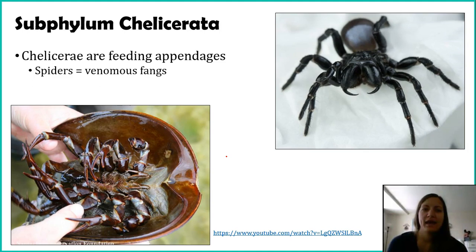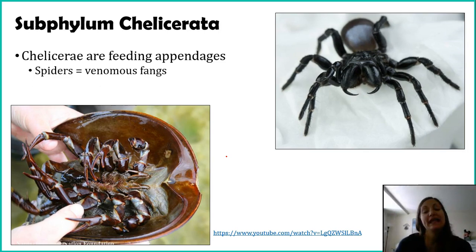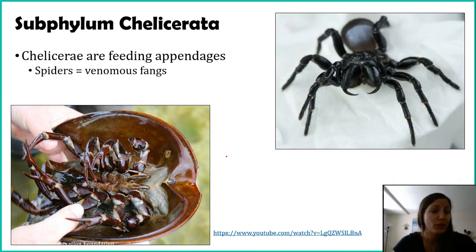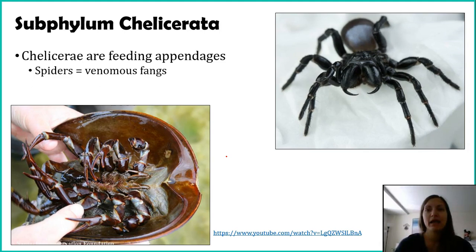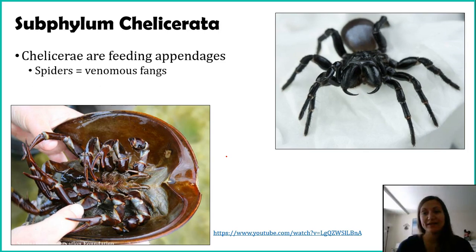The name subphylum Chelicerata comes from what are referred to as the feeding appendages — the chelicerae. On all organisms in this subphylum, whether ticks, spiders, or horseshoe crabs, two of their appendages have changed over time so they're no longer used for movement but for feeding. In spiders, these got modified even further — they're the venomous fangs, used to bite into something and release a venom into that organism. You can see that in this tarantula on the top right.